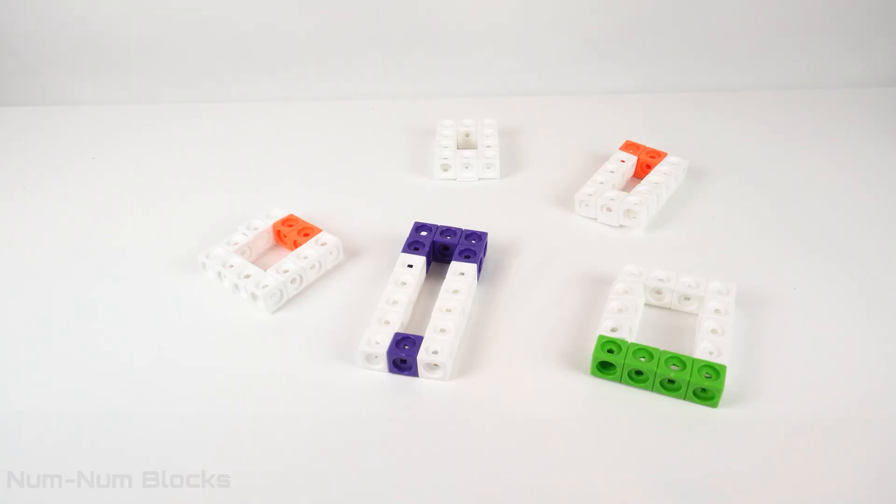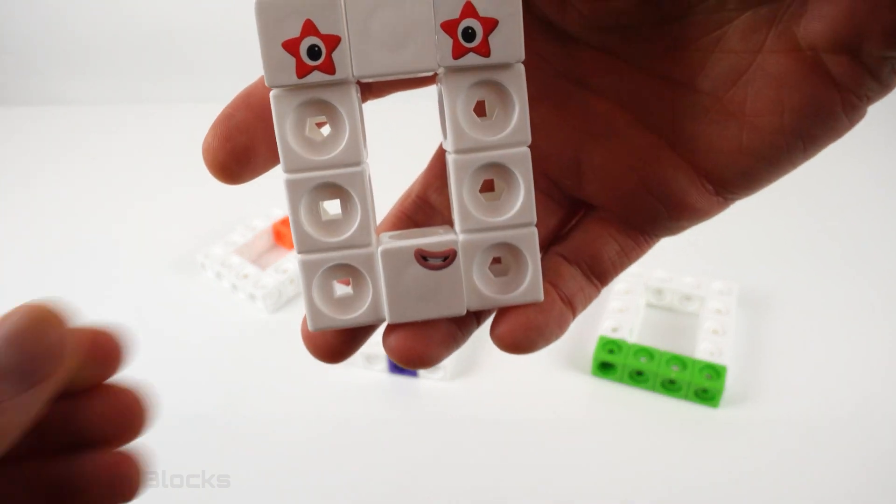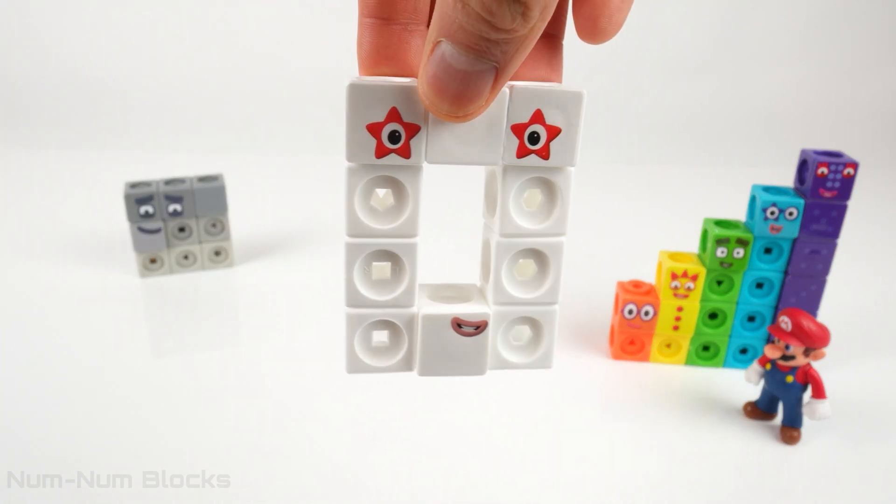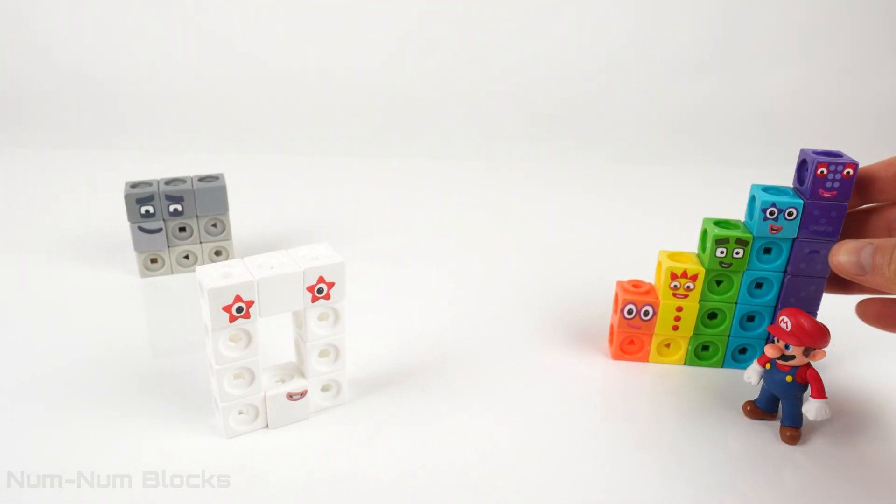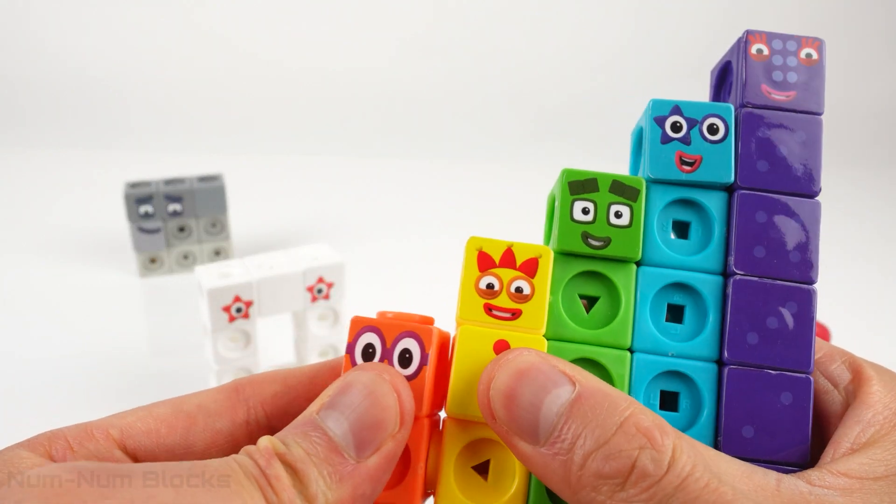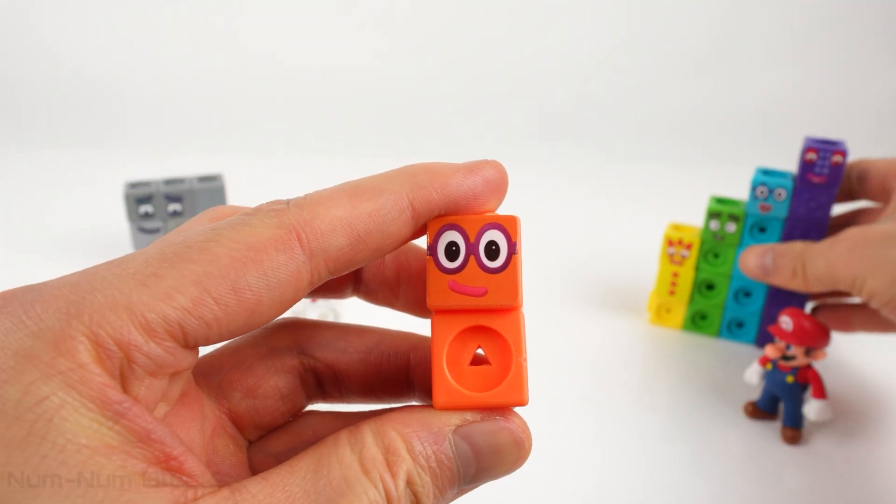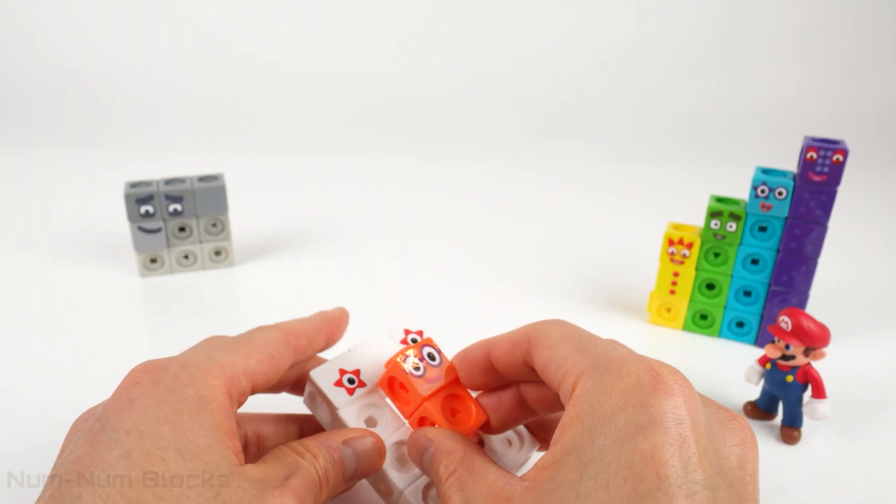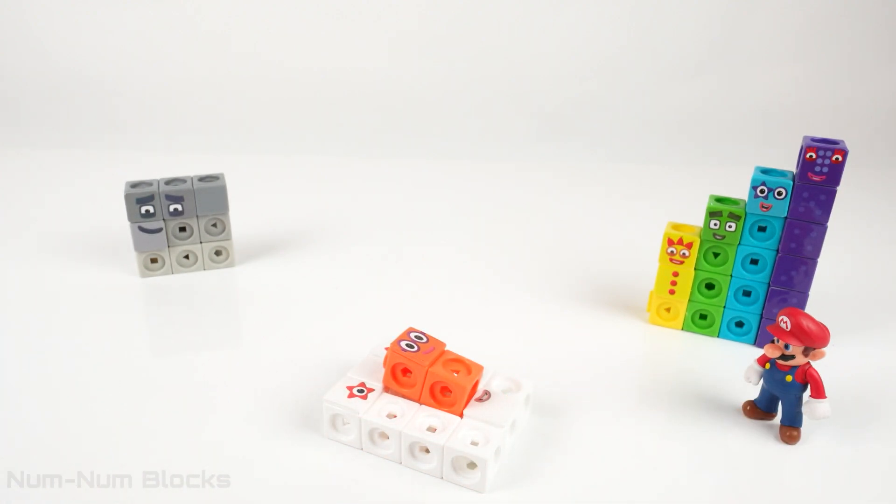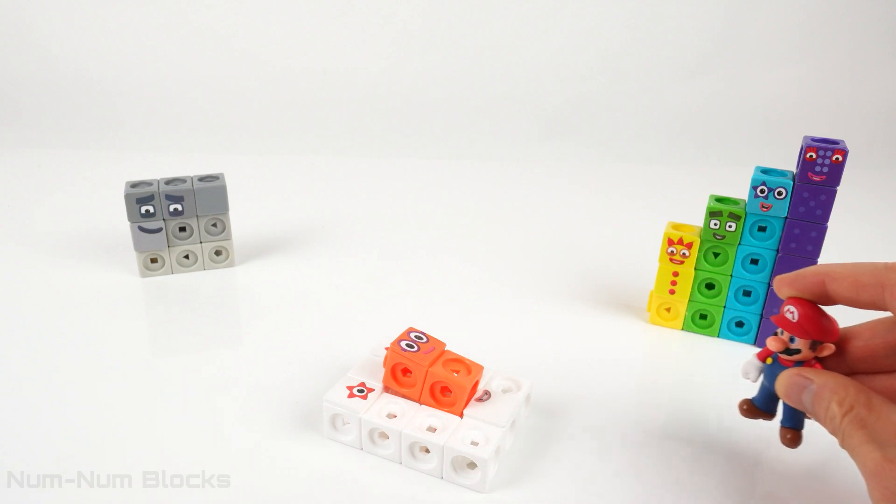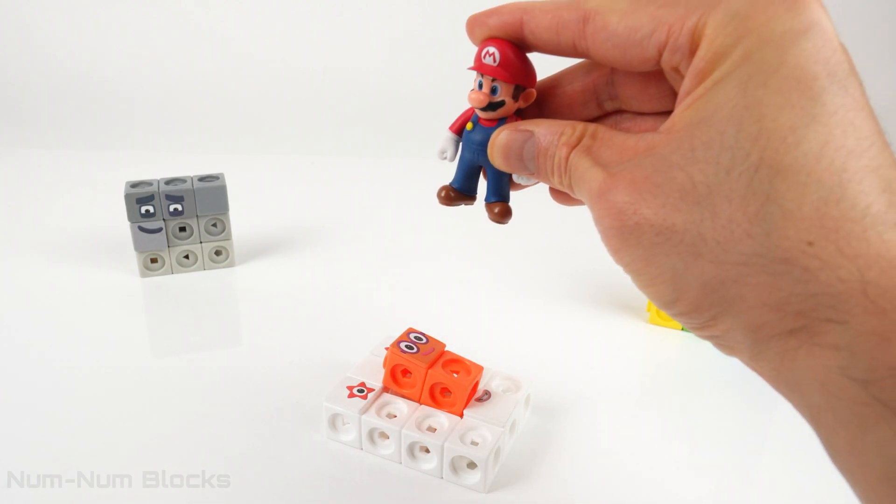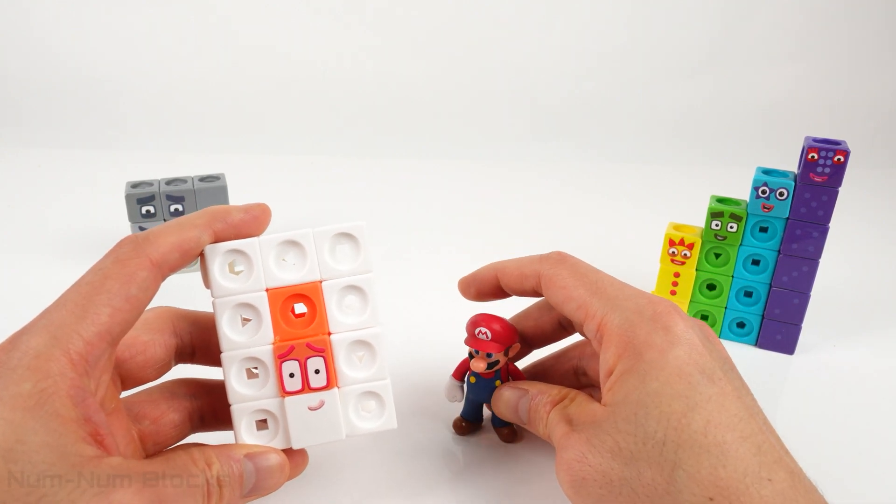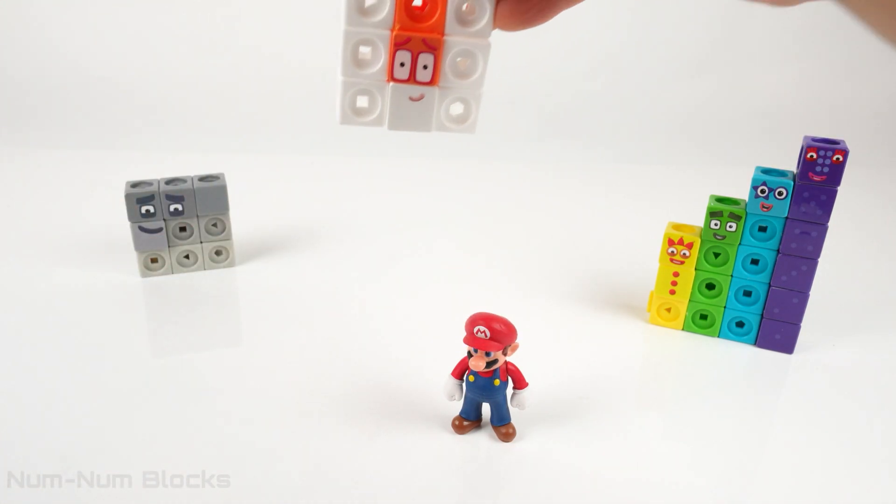Let's pick up another number block. Ten! It's ten! Ten has a rectangular shaped hole. It looks a lot like number block two. Let's place two inside the hole. And now it's time for Mario. Do you know what ten plus two equals? Twelve! That's right, it's twelve!